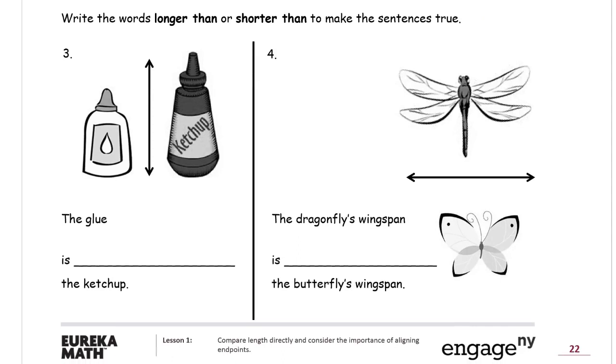Write the words longer than or shorter than to make the sentence true. Looking at this, you can see these endpoints are lined up. We're looking at the tops to see which one's longer or shorter.